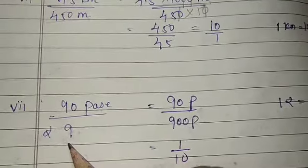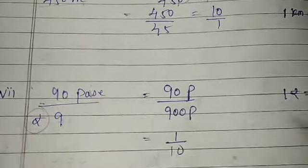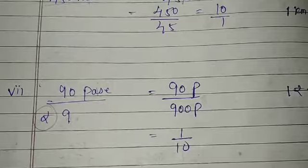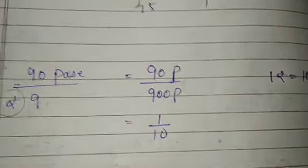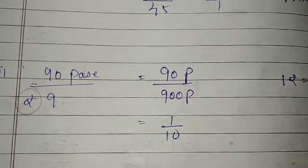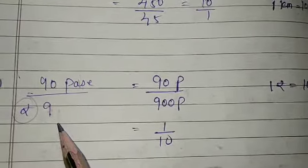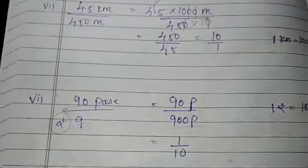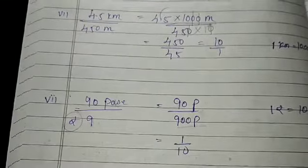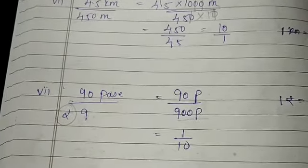Last part, that is 90 pesa over 9 rupees. This is a sign of rupees. Again you can see this, paise and rupees are different units. We have to convert this unit, either in paise or either in rupees. So paise, it is good, because I don't want things in point. So 90 pesa, and then you know 1 rupees is equal to 100 pesa. So 9 rupees is equal to 900 pesa. Then my ratio is 1 is to 10. I hope you are getting something and little little things about ratio. Up to that time, be safe, stay healthy. Thank you. Have a nice day.